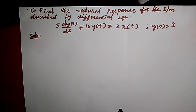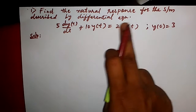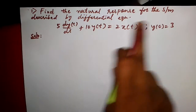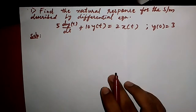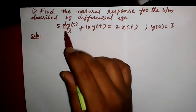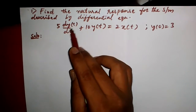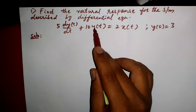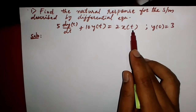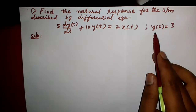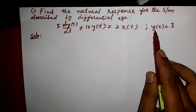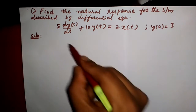Today we are going to see the unit time domain representation for LTI systems, in which we are going to find out the natural response for the system described by the differential equation. The equation is given by 5 dy(t)/dt plus 10 y(t) is equal to 2x(t). The initial condition given here is y(0) is equal to 3.